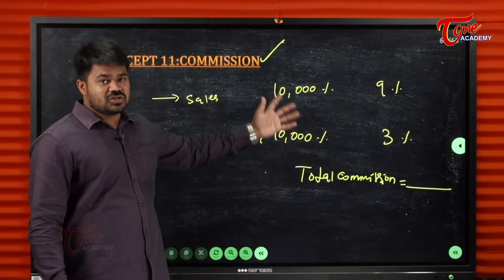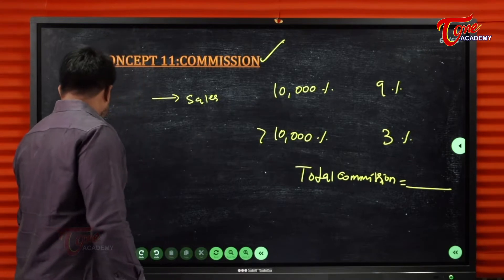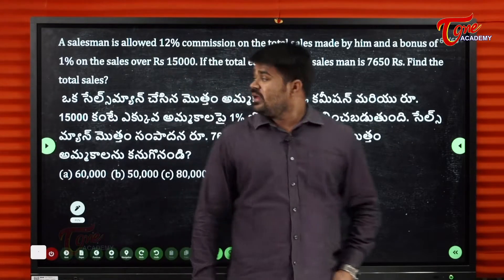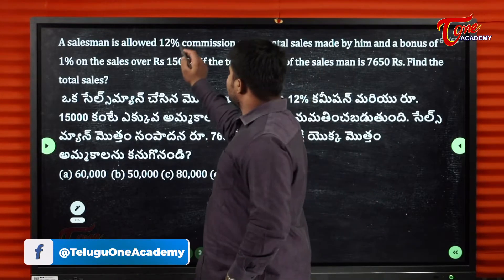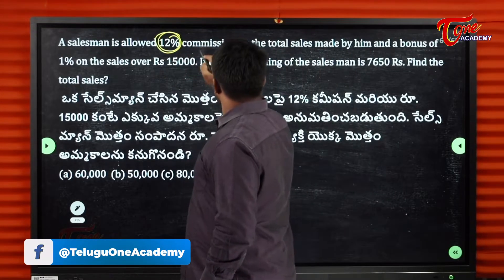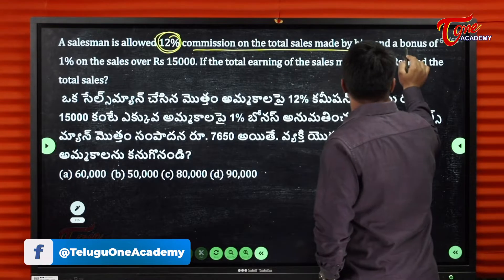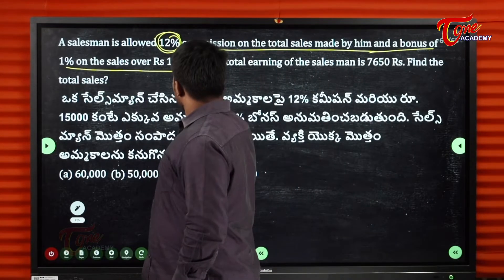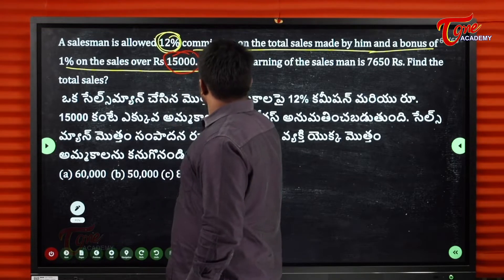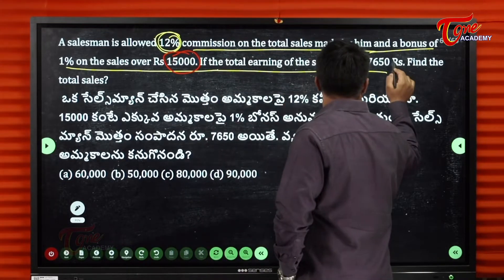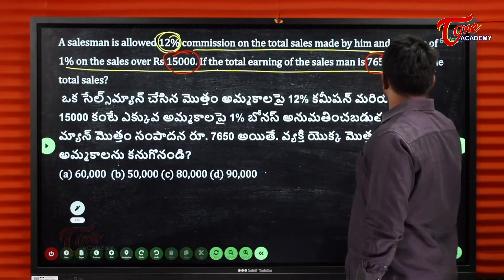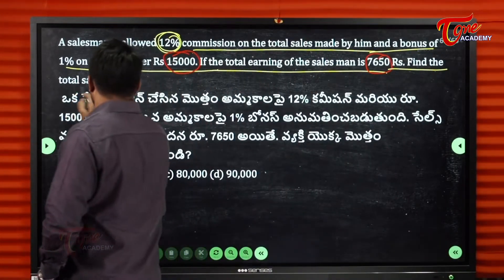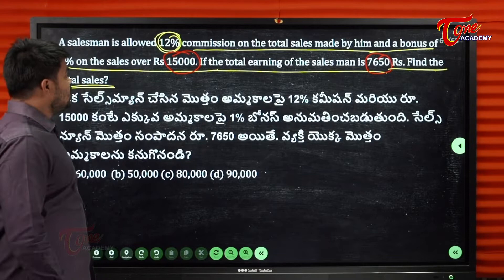Direct example question: A salesman is allowed 12% commission on the total sales made by him, and a bonus of 1% on sales over 15,000. If the total earnings of the salesman is 7,650, find the total sales.